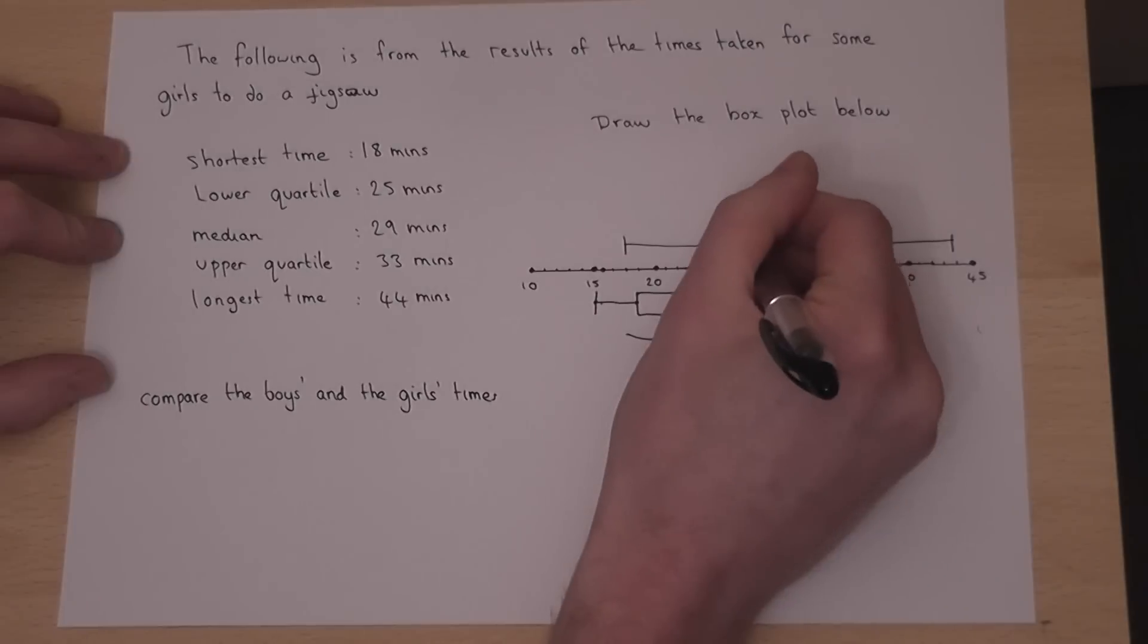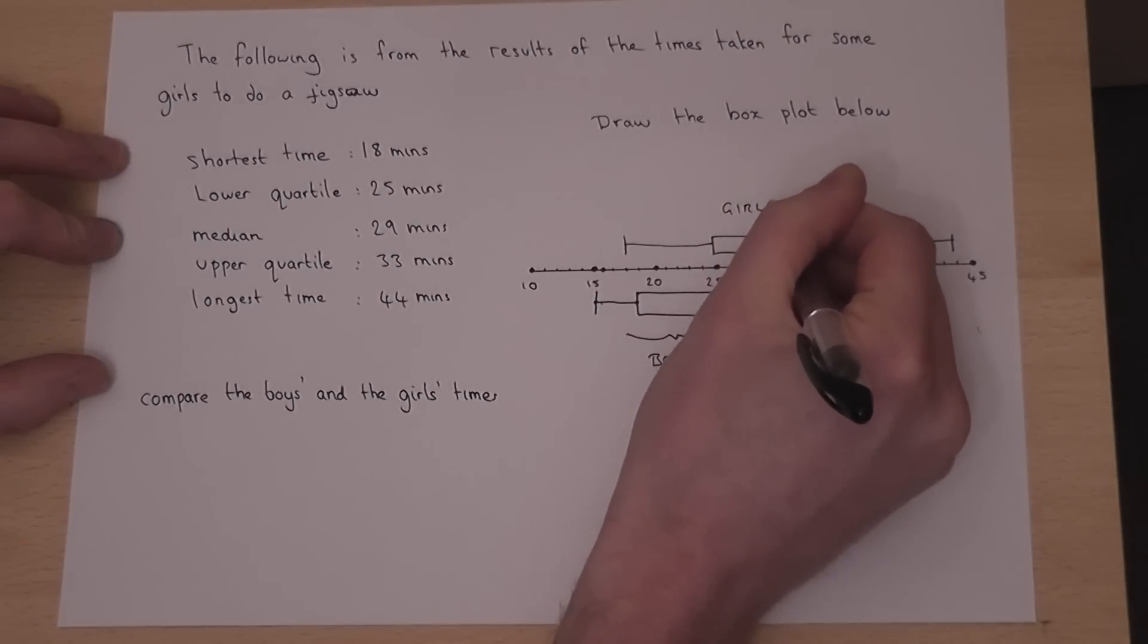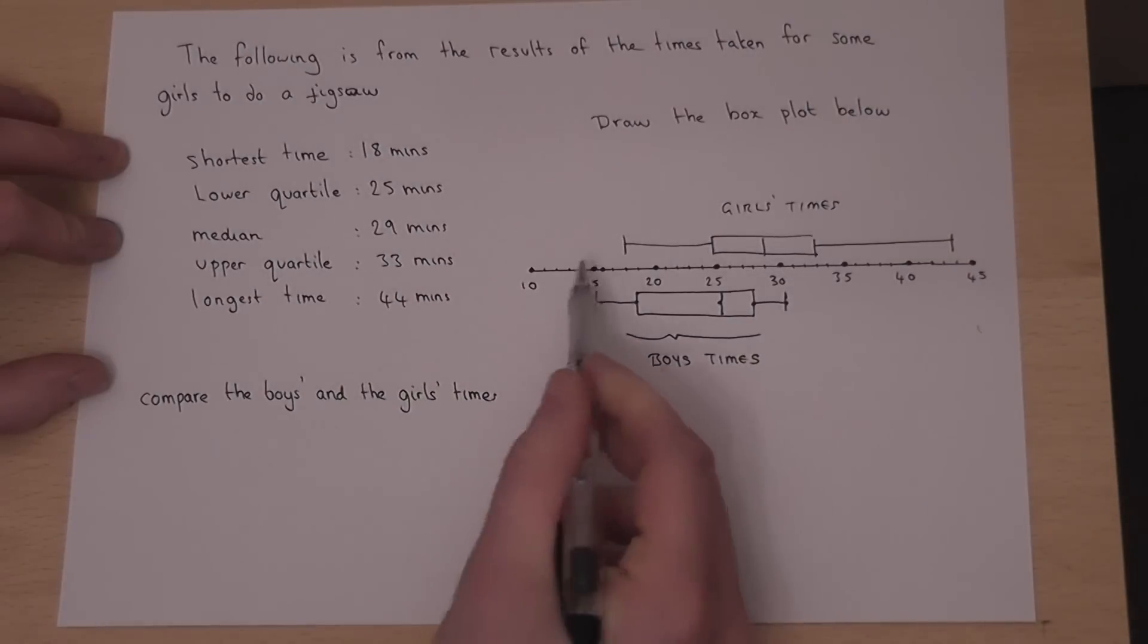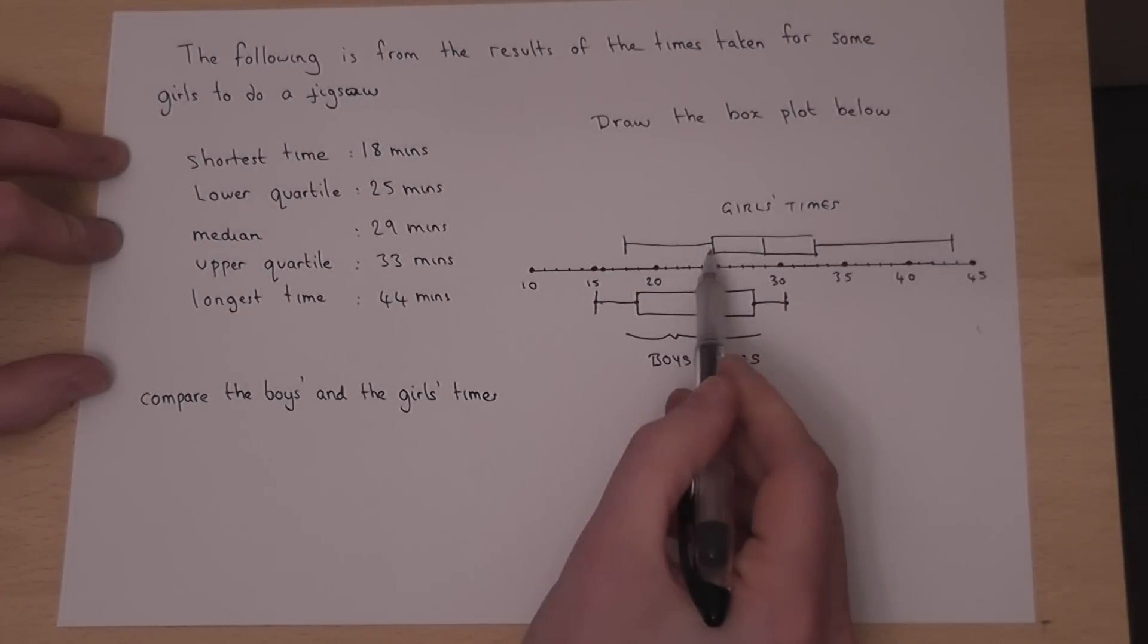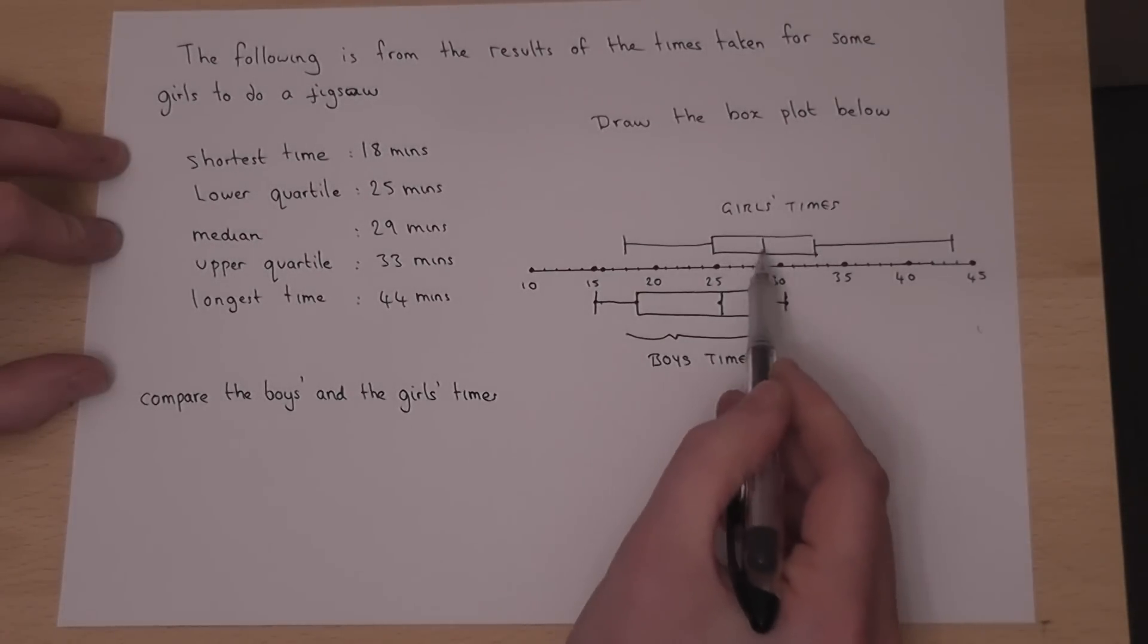So, this box plot represents the given information on a simple graph, and anyone looking at this would know the lowest, highest, lower quartile, upper quartile, and the median.